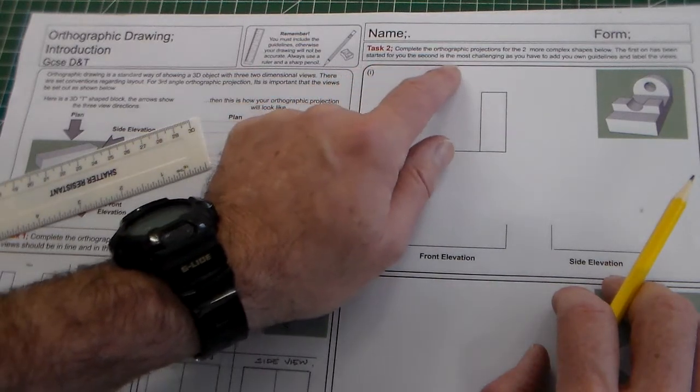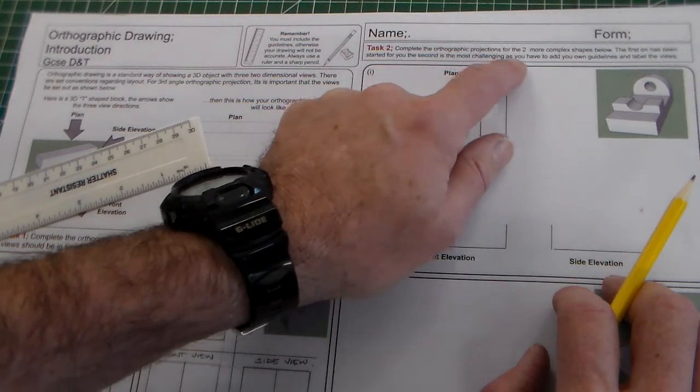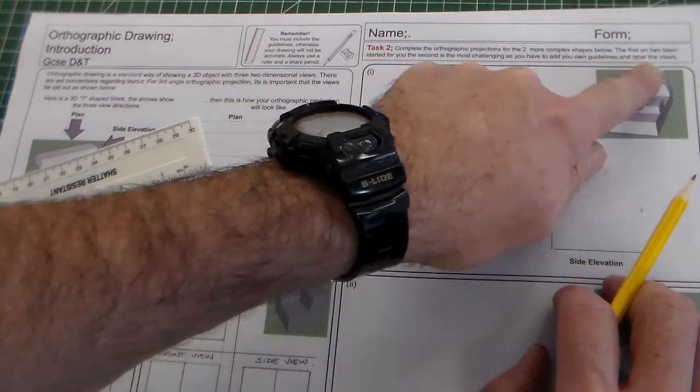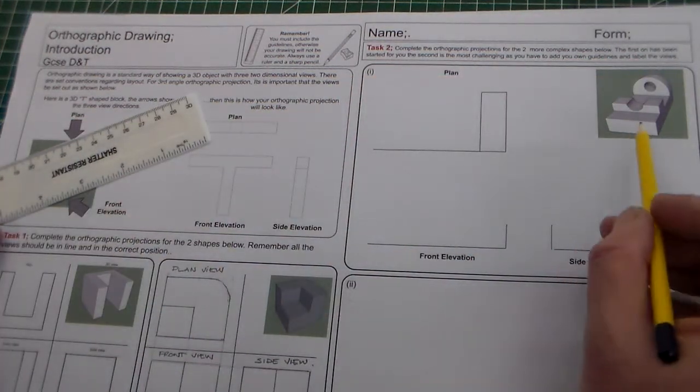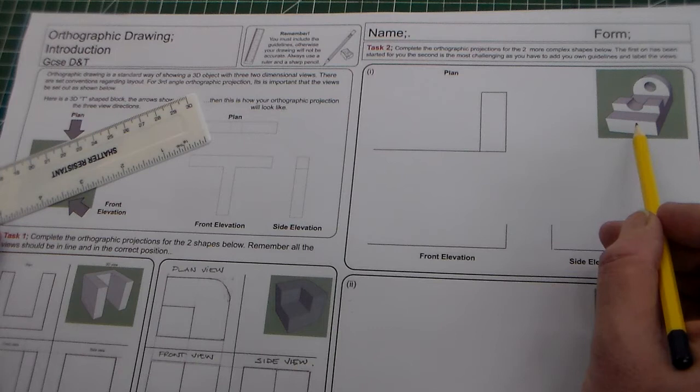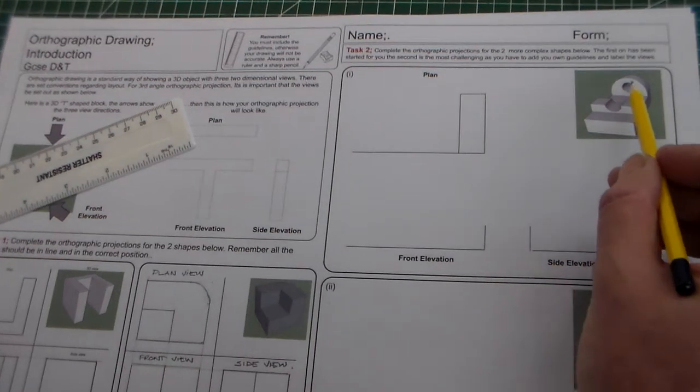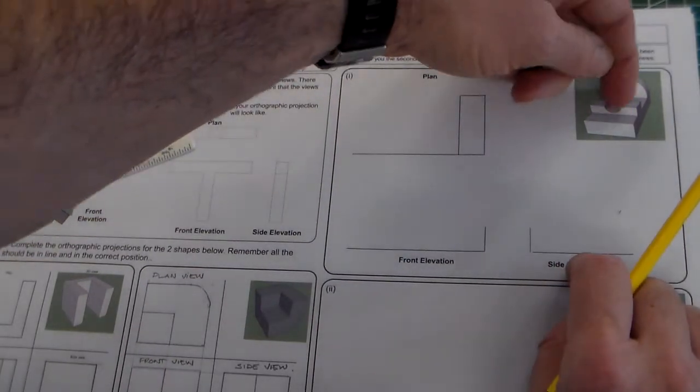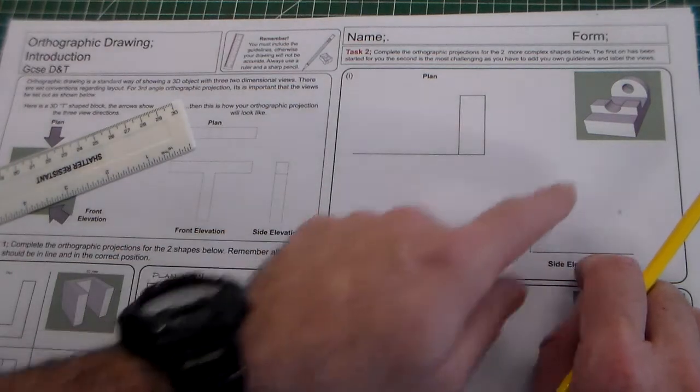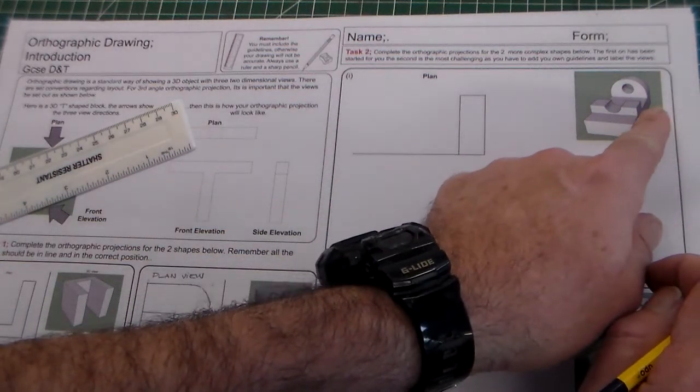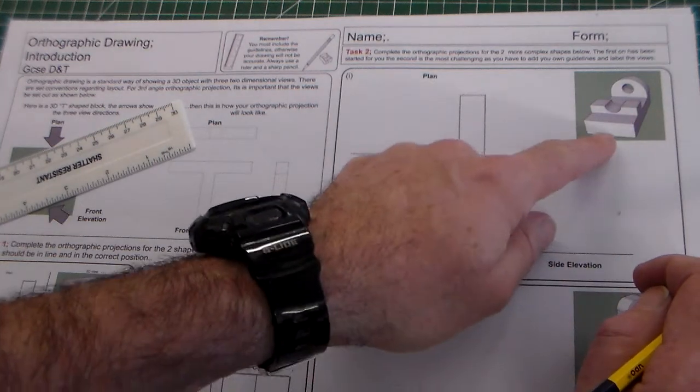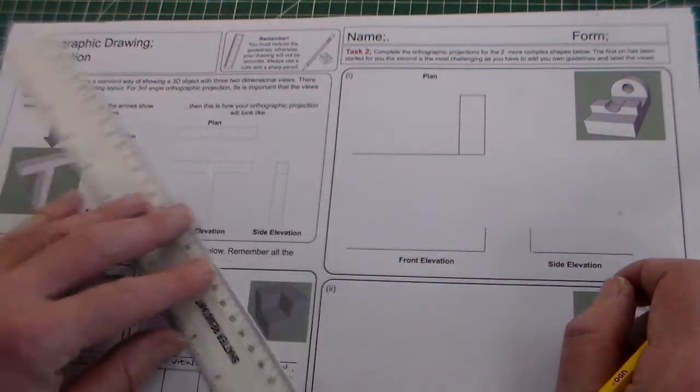The first one has been started for you, the second one is more challenging as you have to add your own guidelines and label the views. Here's the 3D object. We can see the plan view looking from above, the front elevation from this view, and the side elevation there.